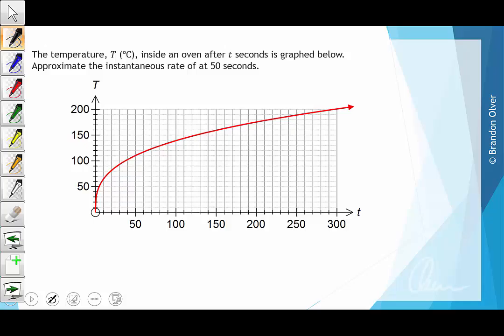So at 50 seconds, the graph is at the point here. If we want to approximate the instantaneous rate of change, we need to draw a tangent to the point on the curve there, which means we'll draw a straight line with a ruler that just touches at that point.